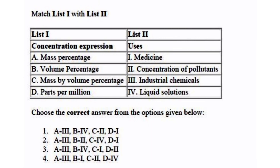The next question is a match-the-following. List one contains concentration expressions: mass percentage, volume percentage, mass by volume percentage, and parts per million. List two contains their uses. The right answer is option three: mass percentage is used for industrial chemicals, volume percentage for liquid solutions, mass by volume percentage for medicine, and parts per million for concentration of pollutants.